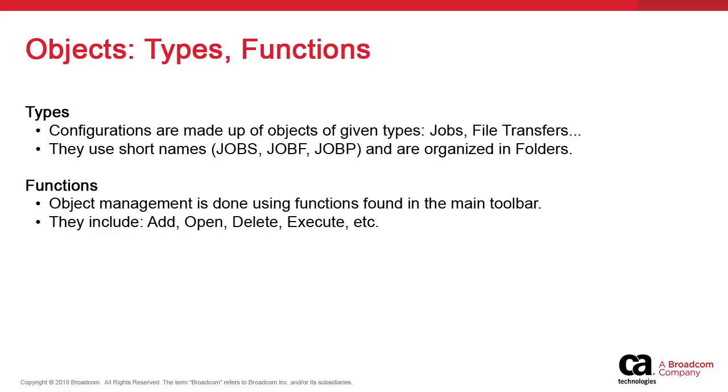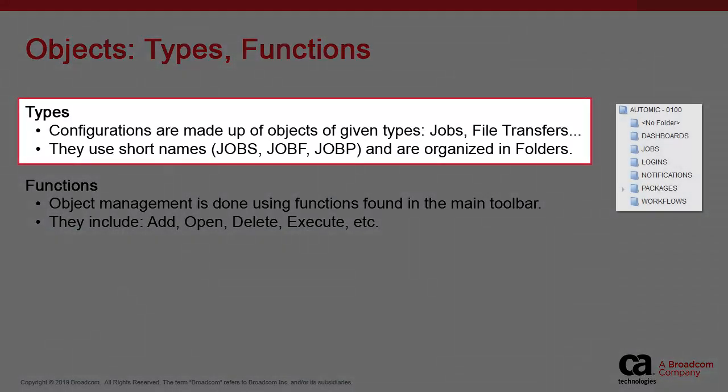A configuration in Atomic Automation is built on objects which are organized in types, with each type fulfilling a specific purpose. For types, we have jobs, file transfers, workflows, and many more.